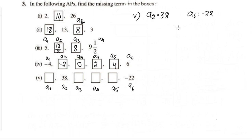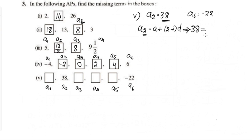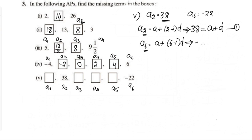Using the formula a_n = a + (n-1)d: equation 1 is A2 = a + d = 38. Equation 2 involves A6.